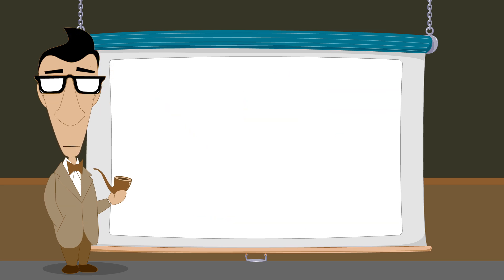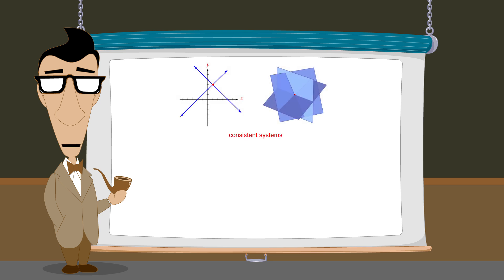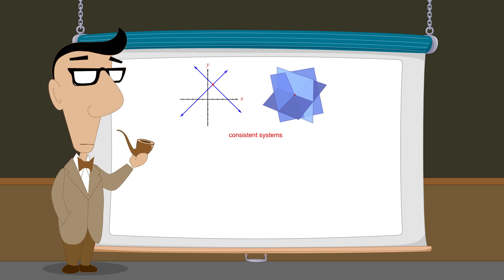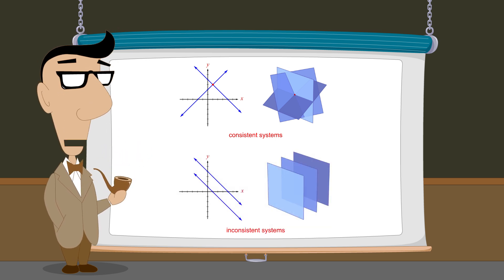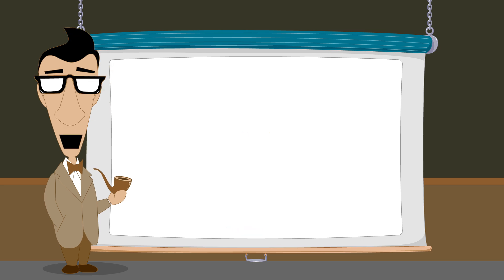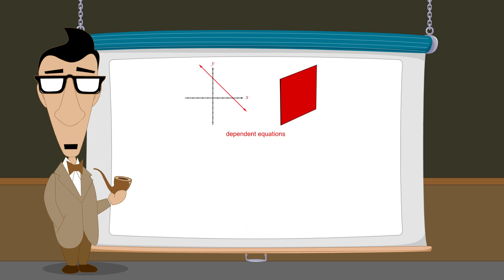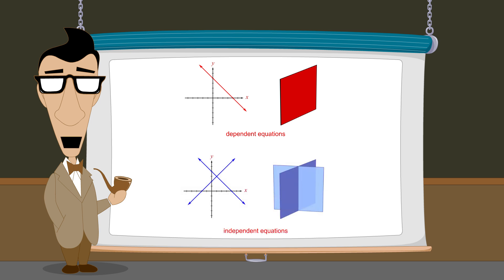Regardless of the number of variables or equations in a system, if the system has one or more solutions it is called consistent, and if the system has no solutions, it is inconsistent. Likewise, two or more equations whose graphs are identical are called dependent, and equations with distinct graphs are independent.